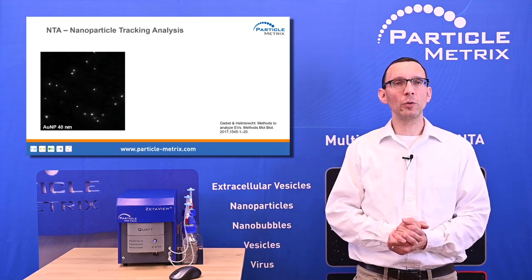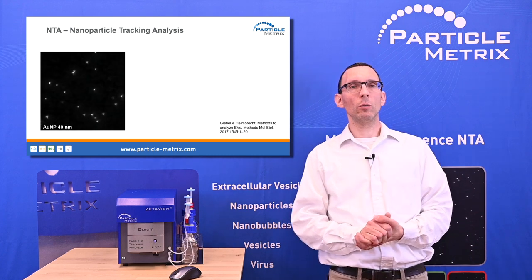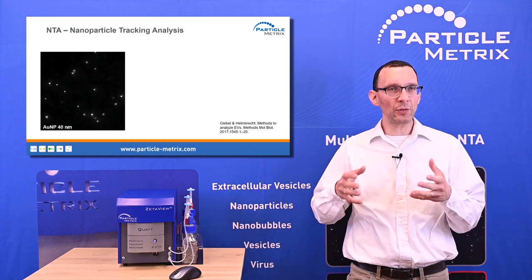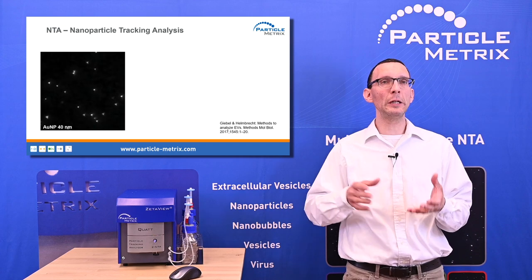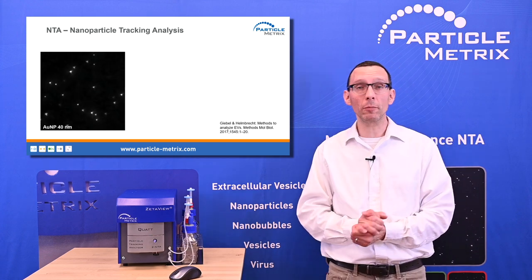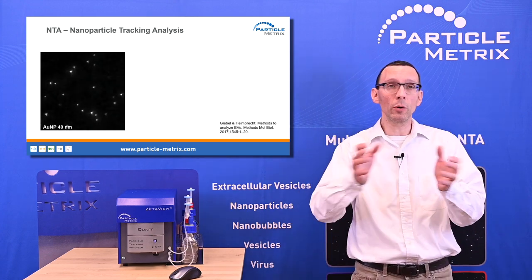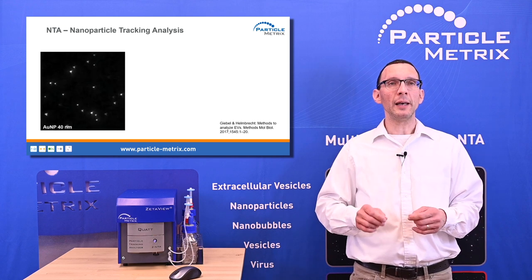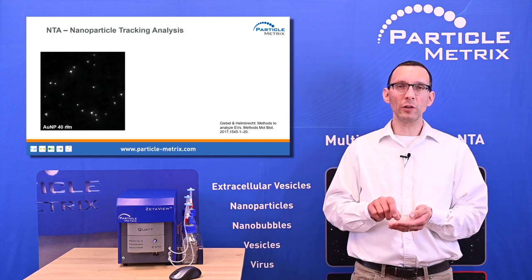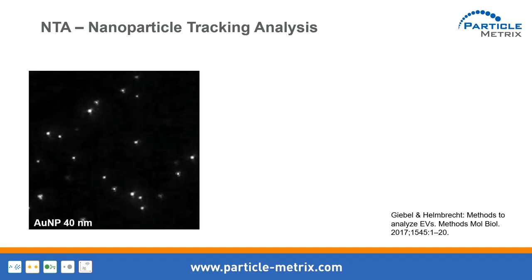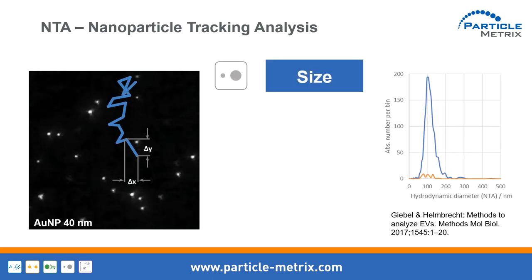Let me introduce those who are not so familiar with nanoparticle tracking what it does. You see the Brownian motion of 40 nanometer gold particles, done by the ZetaView — an ultra microscope. You illuminate with a laser and you see the scattered light at 90 degrees of those particles. The smaller the particles are, the more active they are, and the larger the particles, the slower they move. The algorithm detects the positions and links them, and based on these diffusion properties we derive a particle size for each individual particle. This makes nanoparticle tracking analysis a single-particle analysis tool.